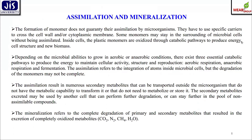The formation of monomers does not guarantee their assimilation by microbes as inclusion bodies; they must use specific mechanisms to cross the cell wall and cytoplasmic barrier. Some monomers may remain in the surrounding of microbial cell factories without being assimilated. The plastic monomers are oxidized through catabolic pathways to produce energy and cell structure. Depending on the microbial ability to grow in aerobic and anaerobic microenvironments, there exist three essential catabolic pathways to maintain cellular activity, structural integrity, and growth. Assimilation results in numerous secondary metabolites that can be transported outside the microbe.